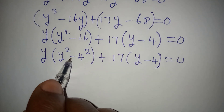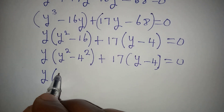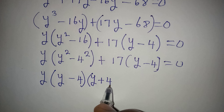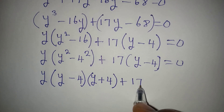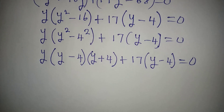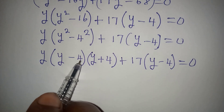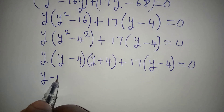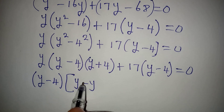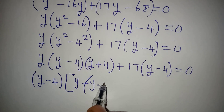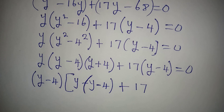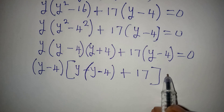Applying difference of two squares: y squared minus 16 becomes (y minus 4)(y plus 4). So we have y times (y minus 4)(y plus 4) plus 17 times (y minus 4) equals 0. Now we can factorize further because (y minus 4) appears in both terms — it is a common factor. Taking (y minus 4) out gives (y minus 4) times the remaining expression.